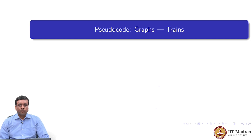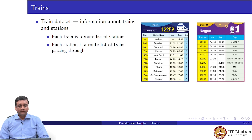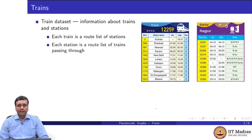We saw how to use graphs to discover interesting things about the student scores database. Now let us look at how to discover things about the trains dataset, which we have not explored so far. In the trains dataset we have two kinds of cards: a card describing trains, where each train has a train number and a sequence of stations from a starting station to an ending station; and for each station, a card listing all trains passing through it, giving the train number, arrival time, departure time, and days of the week on which the train runs. From this we wanted to look at interesting information about which trains take us from where to where, which pairs of cities are connected by trains, and so on.